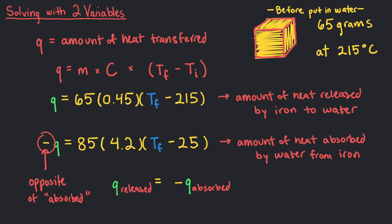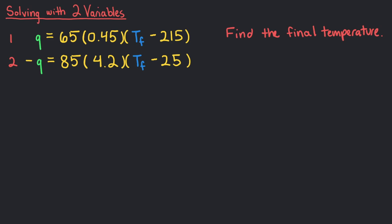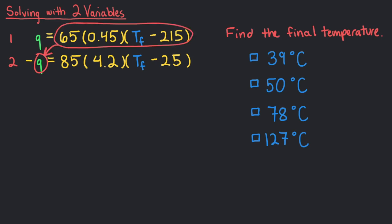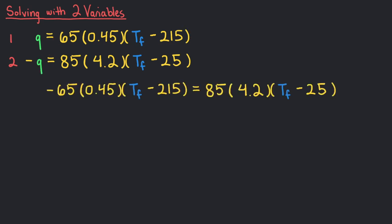Use the method of substitution to find the final temperature if we know that the final temperature for the water and the iron will be the same. We can substitute the q in negative q equals 85 times 4.2 times Tf minus 25 with 65 times 0.45 times Tf minus 215 from the first equation for the release of heat from iron.